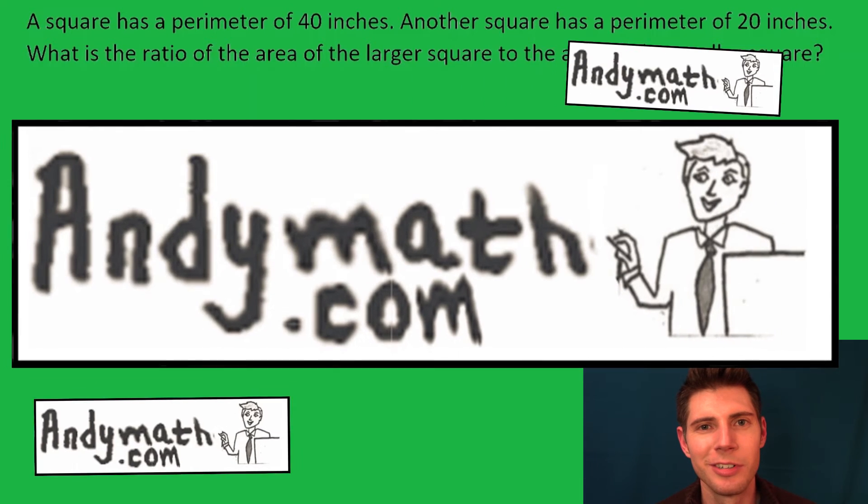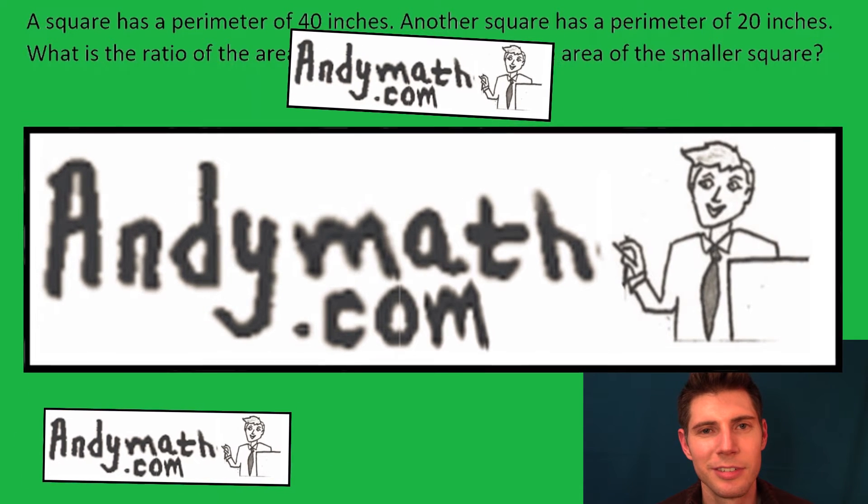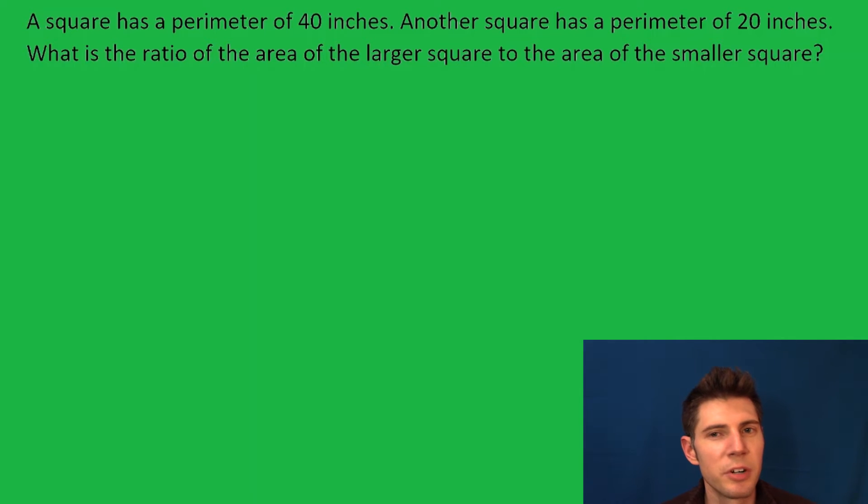Hey guys, welcome to this video. A square has a perimeter of 40 inches. Another square has a perimeter of 20 inches. What is the ratio of the area of the larger square to the area of the smaller square?